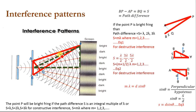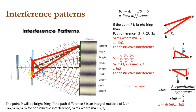Here we will explain the interference pattern. This is slit A, this is slit B, and this is point P on the screen. We will determine the distance of these fringes and also determine the path difference and other parameters. Let's suppose this is the point of a fringe on the screen. This is slit 1, this is slit 2, and this is the center distance between slit 1 and slit 2.